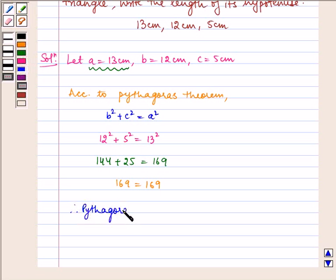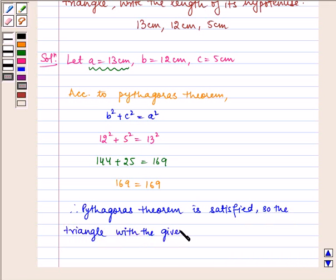Therefore, Pythagoras theorem is satisfied. So the triangle with the given sides is a right triangle.